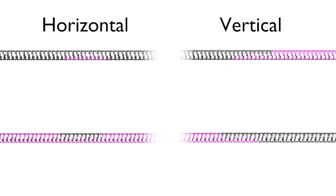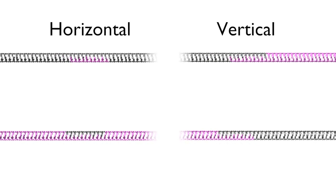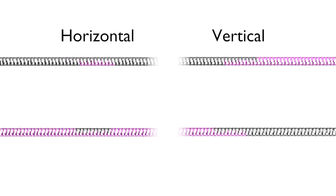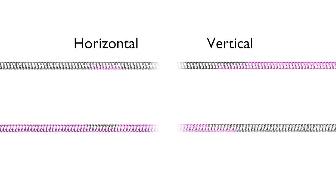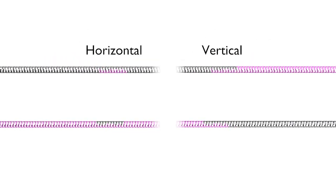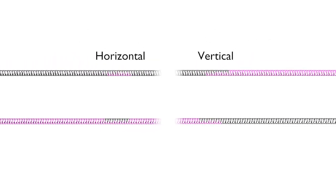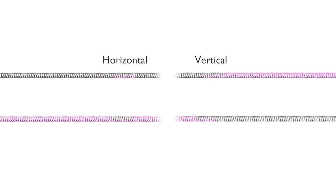Both pairs of progeny duplexes also contain regions of heteroduplex DNA in which complementary strands from each parental duplex are paired. Thus, formation and resolution of Holliday junctions can result in the permanent exchange of DNA segments between homologous parental duplexes.